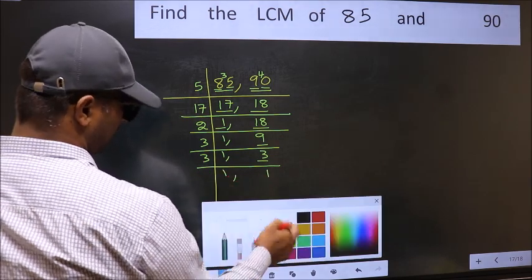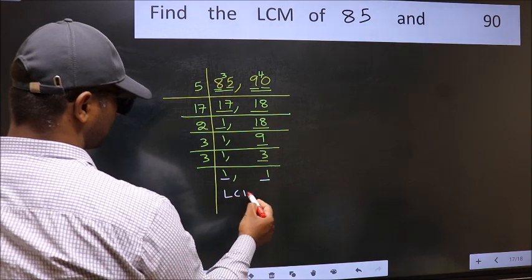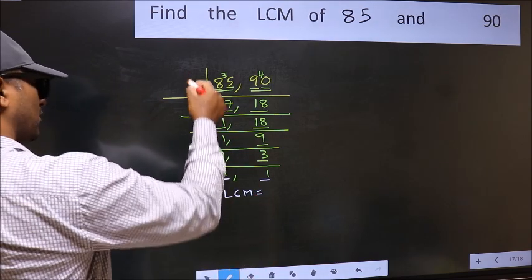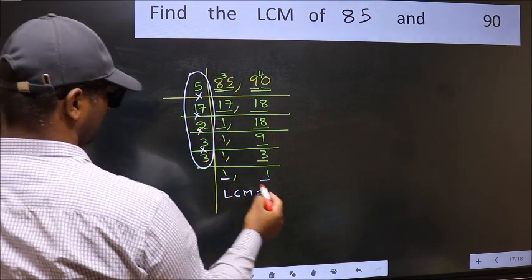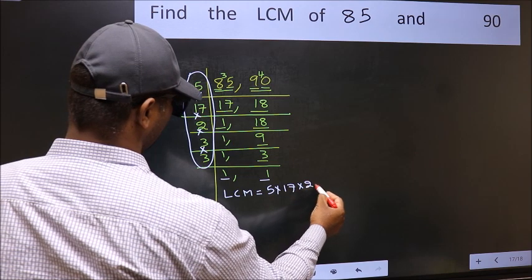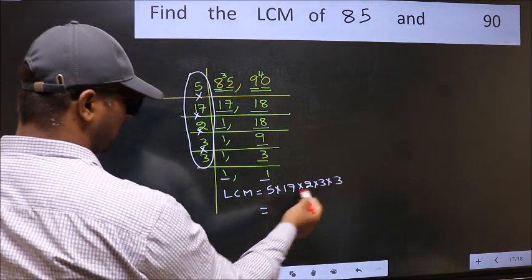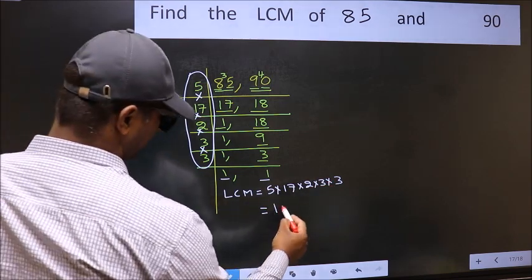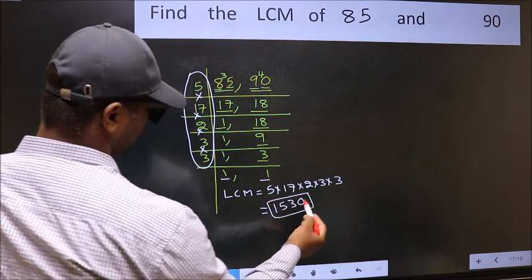So we got 1 in both the places. So our LCM is the product of these numbers. That is 5 into 17 into 2 into 3 into 3. When we multiply these numbers, we get 1530 is our LCM.